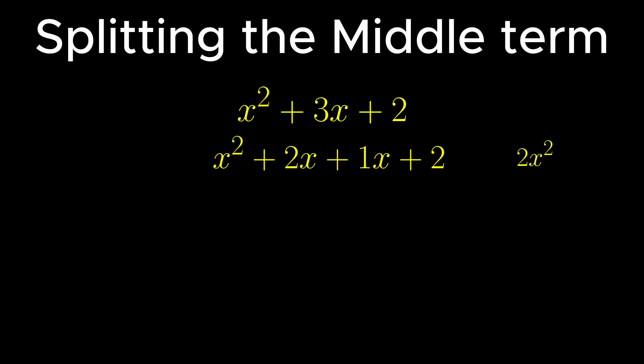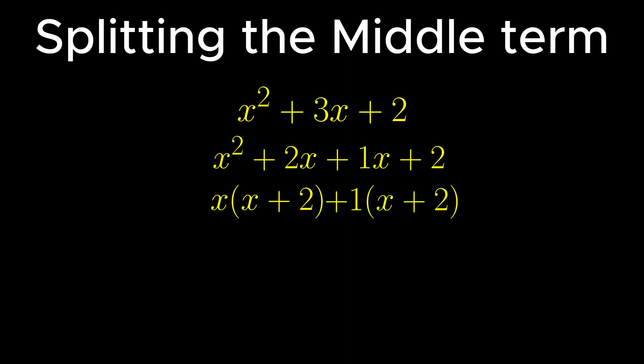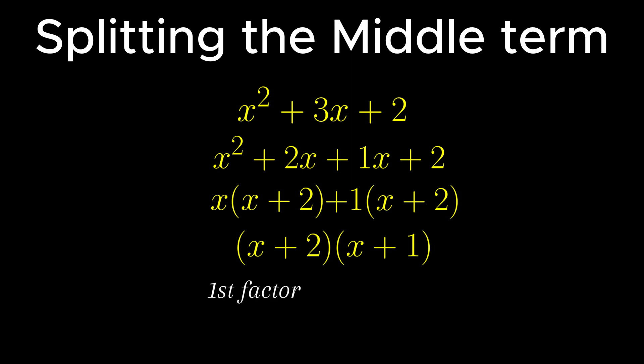As the number of terms is now even, the grouping method is applicable. On taking x as the common factor from the first group, we get x into x plus 2. While taking plus 1 as the common factor from the second group, we get plus 1 into x plus 2. Since the terms are in multiplication and hence considered as 1, therefore taking x plus 2 as the common factor from both terms, we get x plus 2 into x plus 1. Here x plus 2 is the first factor, while x plus 1 is the second factor of the given expression x squared plus 3x plus 2.